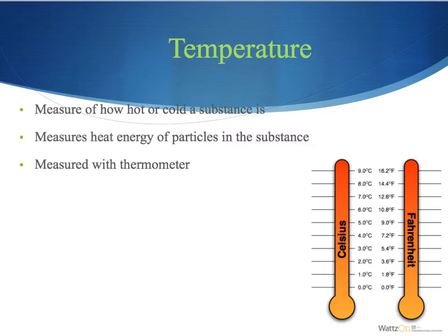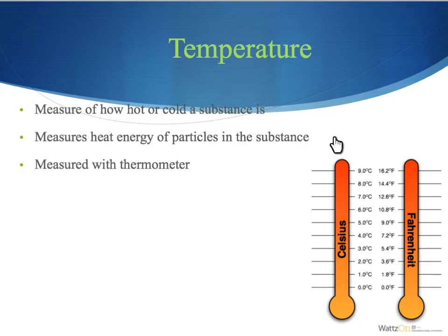Temperature is the measure of how hot or cold something is — you can measure outside air temperature, the inside of your house, or a pot of water. Temperature physically measures the heat energy of particles in a substance; if they have a lot of heat energy, they're moving around a lot. We measure temperature with a thermometer. In science we use Celsius, but in the United States the weather channel uses Fahrenheit, so the biggest difference here is working with Celsius instead of Fahrenheit.